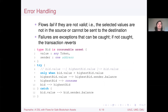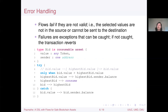An important feature of flows is that they can fail if they are not valid, meaning the selected values are not in the source or cannot be sent to the destination. Failures are exceptions that can be caught; if not caught, the transaction reverts and no changes are made. Here in an auction example, when a new bid is placed, if that bid value is greater than the current highest bid, we replace it; otherwise we refund the bid.